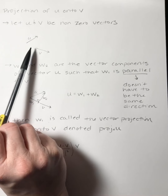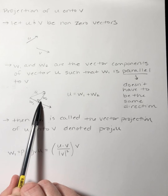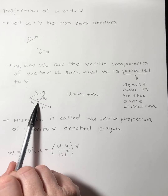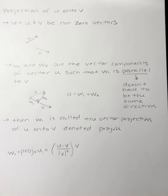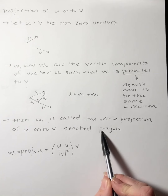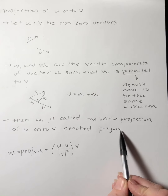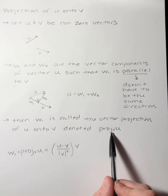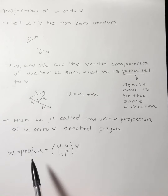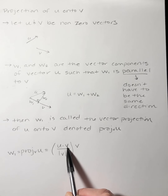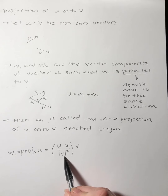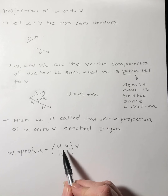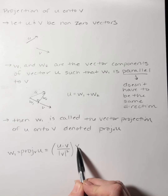So given that setup, this vector w sub 1 is called the vector projection of u onto v, denoted as the projection of u onto v, where v is a subscript. This is how you find the projection of u onto v: you take the dot product of u and v, divide by the magnitude of v squared — that gives you a scalar — and then multiply that times vector v.